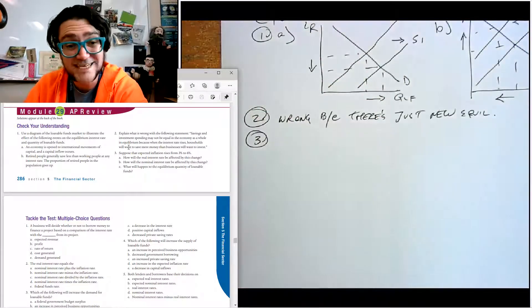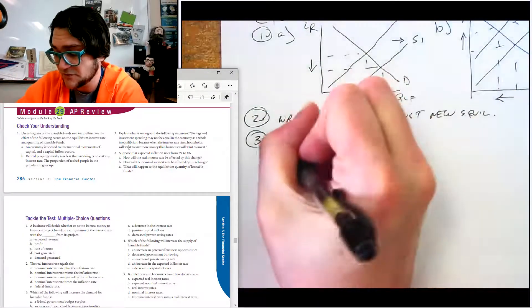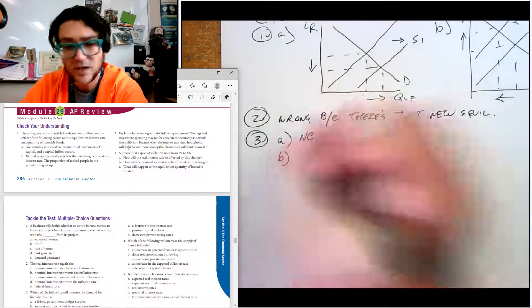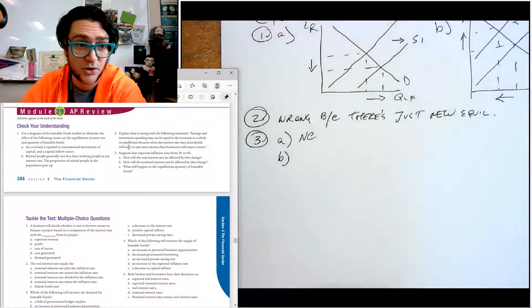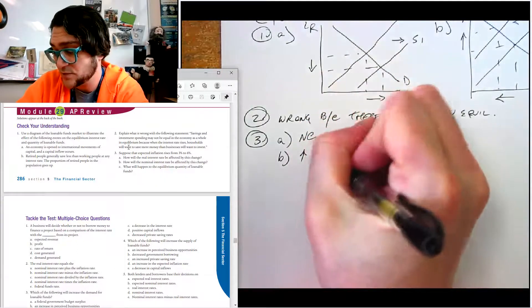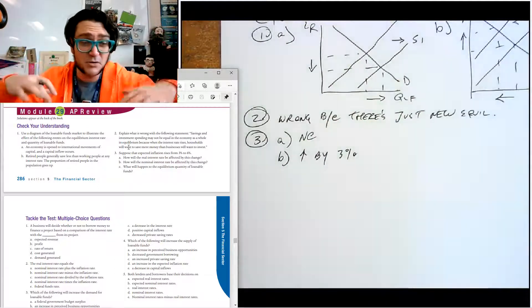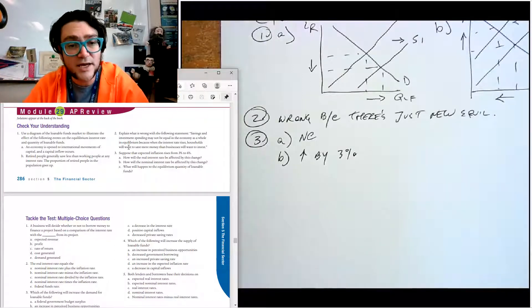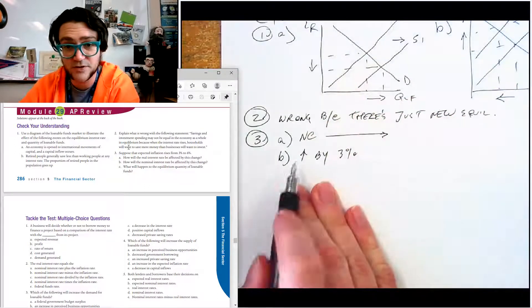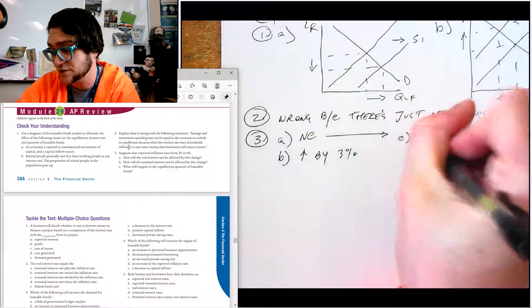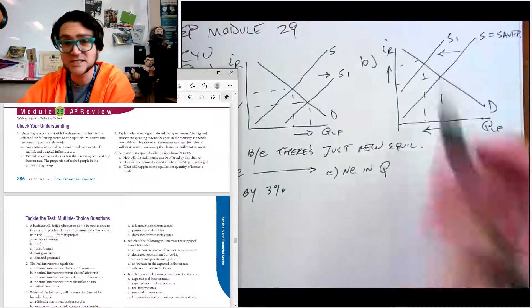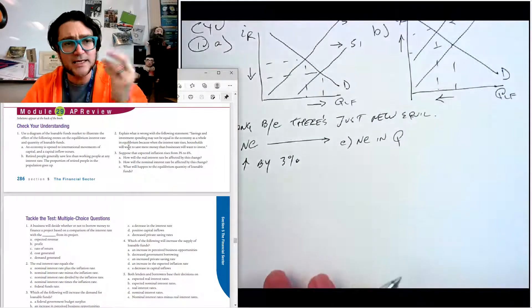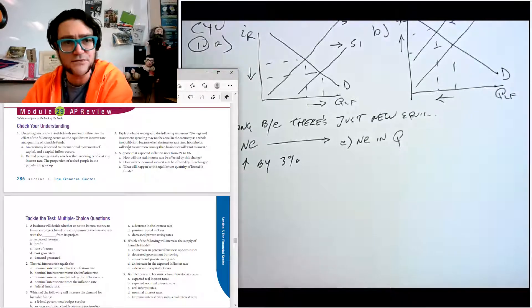Number three, suppose that expected inflation goes from three to six. How will the real interest rate be affected? If it's expected, if we think it's going to happen, then we're just going to build it in. So no change. B says what will the nominal interest rate be affected? It should go up by 3%, because if it's expected then everybody just builds it in. In that case it goes from three to six. What will happen to the equilibrium quantity of loanable funds? Well, if there's no change in the real interest rate, then there's no change in quantity, because this is the real interest rate. The nominal interest rate can go up and down all day long. It's the real interest rate that affects the quantity and the amount of loanable funds.